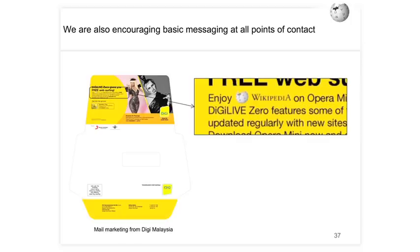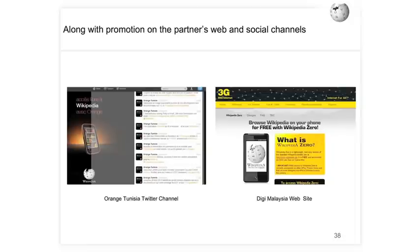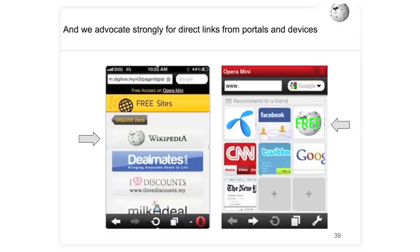We're also encouraging simpler messaging beyond big bus stop posters. An example from our partner Digi in Malaysia — a Telenor affiliate — is a mailer in people's mailboxes advertising their network and saying that if you activate a phone, you can use it to access Wikipedia for free. There's also basic web promotion on partner social media sites and websites, which won't hit the long tail of new mobile users but is an additional way to get the word out.